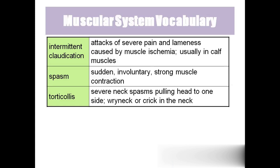Intermittent claudication: suddenly during the night, if you stretch your foot, you may have muscle cramps on the backside of the leg — that is intermittent claudication. It is severe pain with insufficient blood supply, caused by muscle ischemia, which means lack of blood supply, usually seen in the calf muscles. Spasm means sudden involuntary strong muscle contraction. Torticollis — also called wry neck — the neck becomes locked in a sideward position due to neck muscle spasm, which is involuntary contraction of the neck muscles.